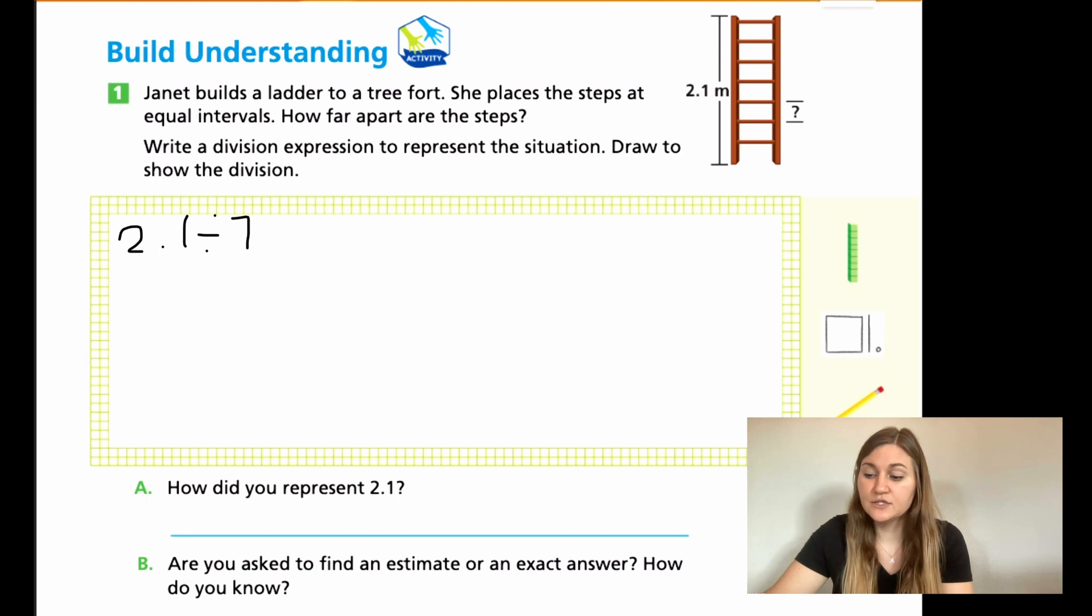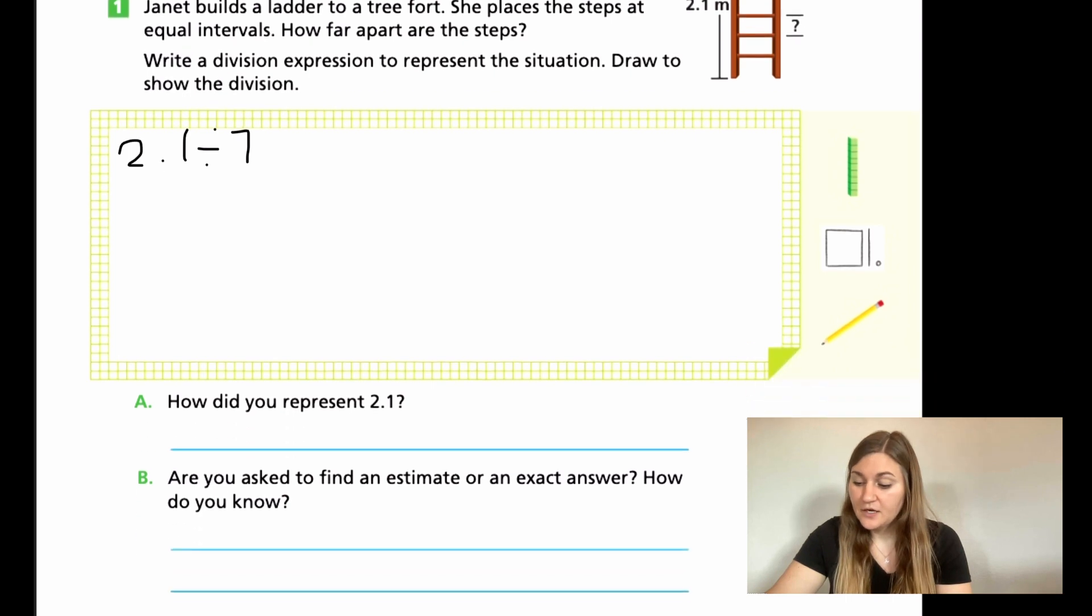Now you need to draw a picture to represent what's going on. And again, you can use those base 10 blocks to help. Remember that we have been combining the numbers into the same place value to make them easier to divide. I suggest you do the same thing. And then for A, how did you represent 2.1? Go ahead and tell me what you did when you were doing your visual model. For B, are you asked to find an estimate or the exact answer and how do you know?